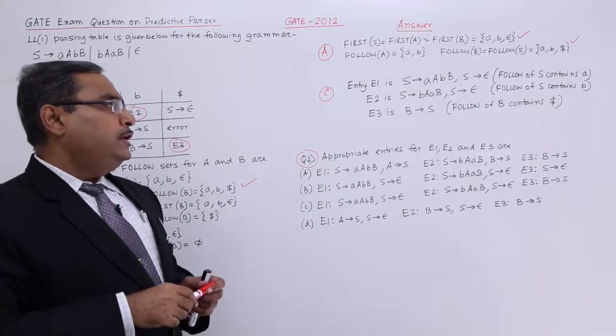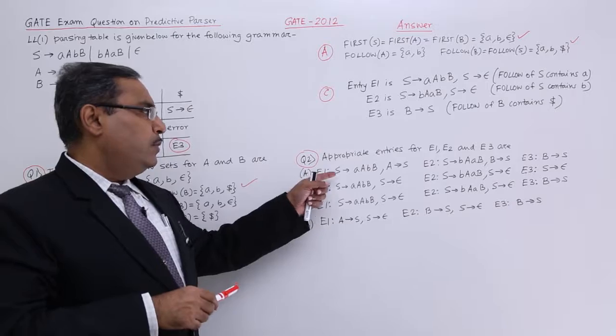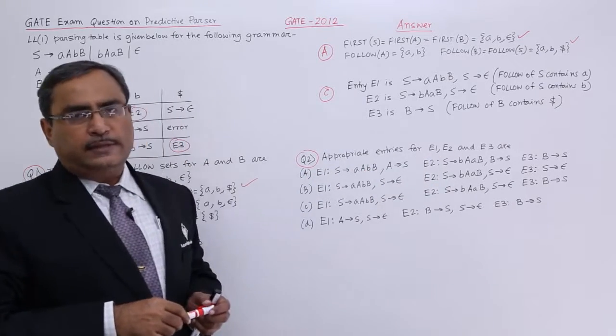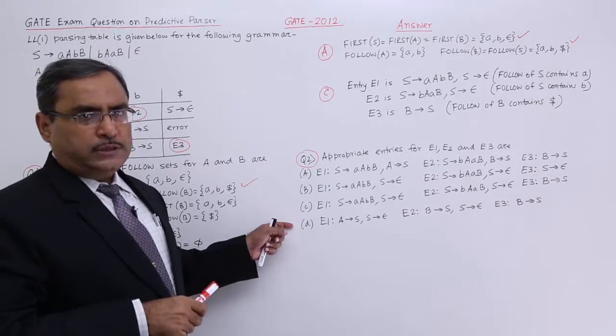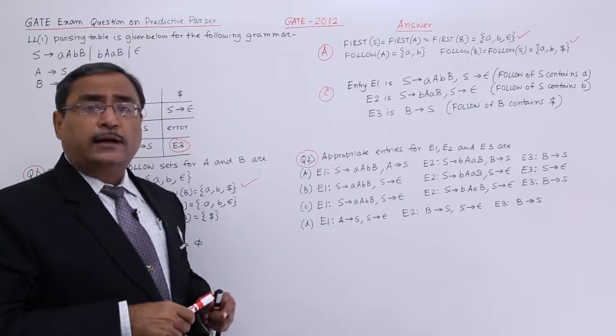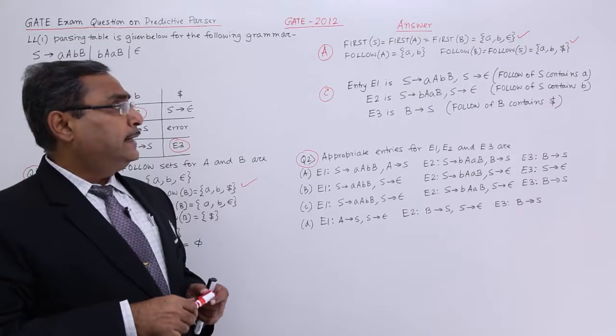Appropriate entries for E1, E2 and E3 are. E1, E2 and E3 they have given the suggestions. Four such options are there. We should have to select the correct one.